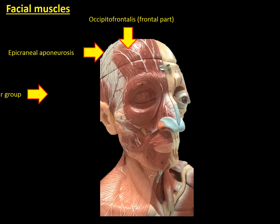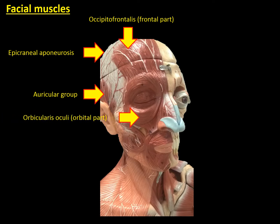By the ear, we can observe the auricular group. We can also see the auricularis oculi muscle, the orbital part, and the palpebral part.